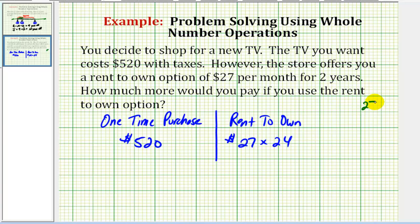So 27 times 24, multiply by the four first. Four times seven is 28, carry a two. Four times two would be eight plus two, that's ten. Now multiply by this two here, but we're really multiplying by 20. So we add a zero to the ones column.